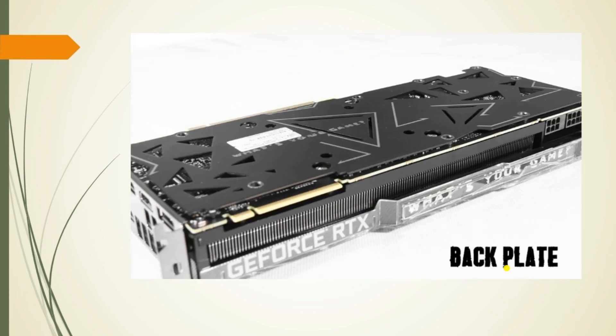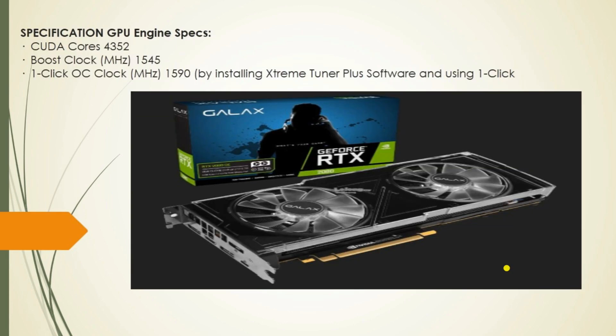This is the back side of the graphics card plate. GPU engine specifications: 4352 CUDA cores, base clock 1545 MHz, boost clock up to 1590 MHz achievable by installing the Xtreme Tuner Plus software and using one-click overclocking.